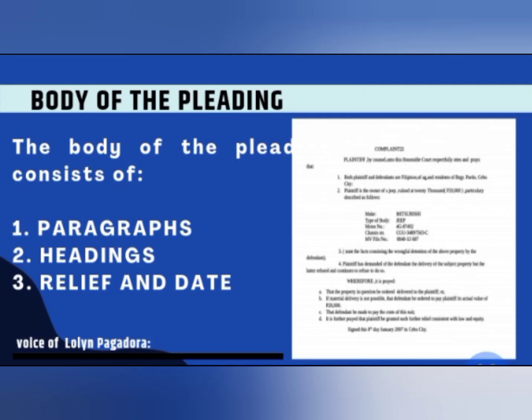Headings are necessary when two or more causes of action are joined. The first shall be titled 'First Cause of Action,' and so forth. In the answer, the paragraphs are prefaced 'Answer to the First Cause of Action' or 'Answer to the Second Cause of Action,' and so forth. The last one is the relief and date. The pleading shall specify the relief or remedies sought and may add a general prayer for such order or other relief as may be deemed just and equitable. Every pleading shall be dated.